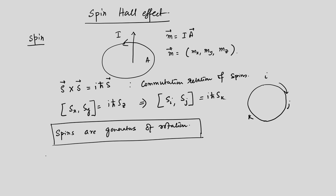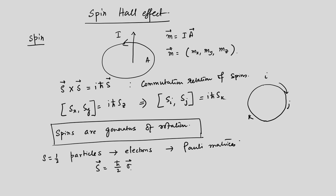What is important for us are spin-half particles, which are nothing but electrons. There is a special notation used for spin-half particles: S is written as (ℏ/2)σ, where S is the spin vector and σ are the Pauli matrices with components σ_x, σ_y, and σ_z.